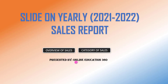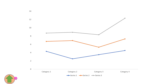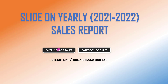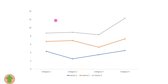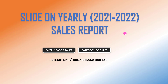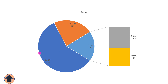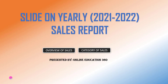In this video tutorial we are going to link one slide to another slide in Microsoft PowerPoint. Here, clicking on 'Category of Sales' will go to that presentation slide. Clicking the back button returns to the previous slide. Clicking on 'Overview of Sales' goes to the sales slide. Watch the video till the end to become an expert at making this.